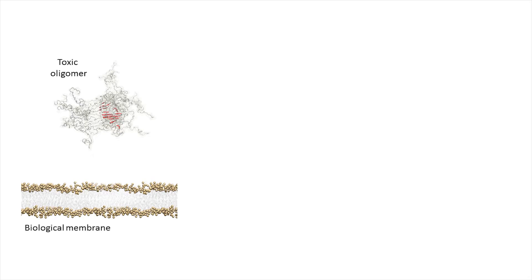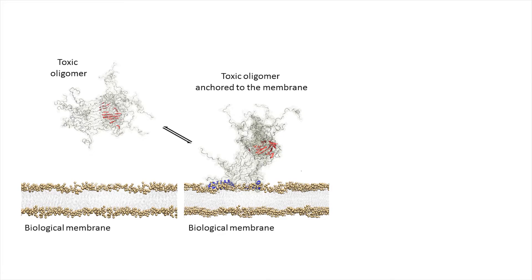As we can see in these images, the toxic oligomer can interact with the membrane through an end-terminal tail of the polypeptide chain that is exposed on the surface of the oligomer.